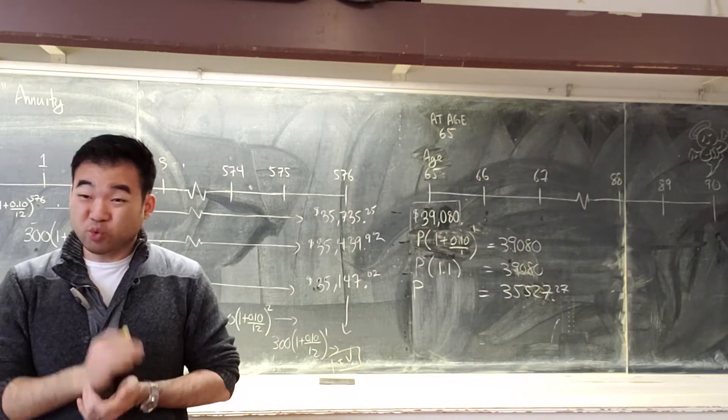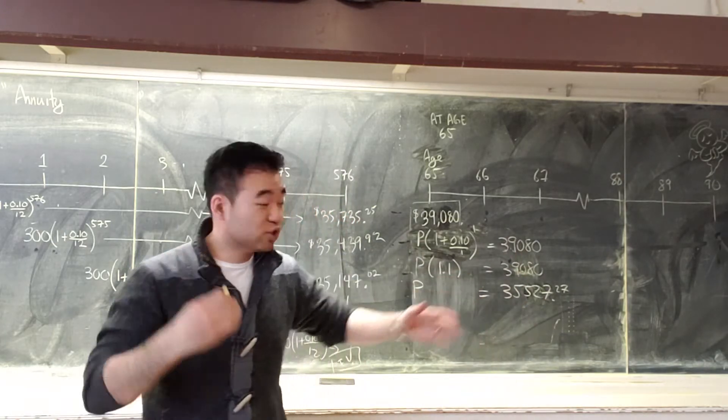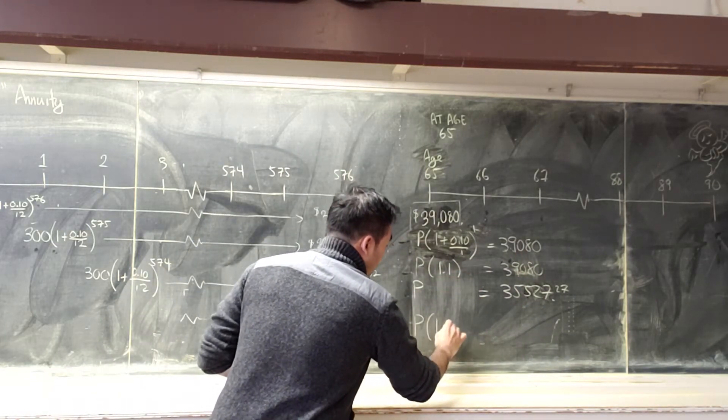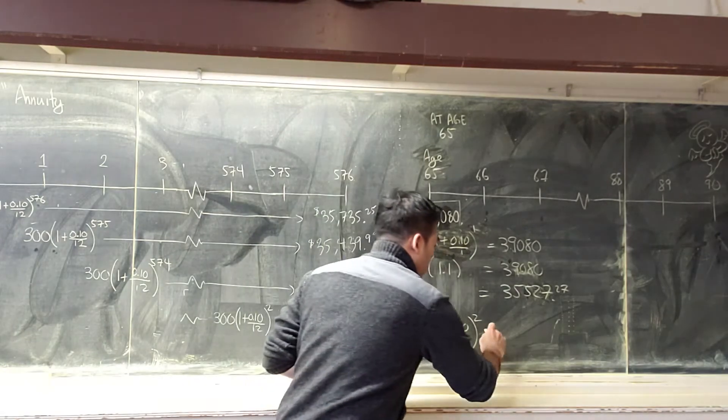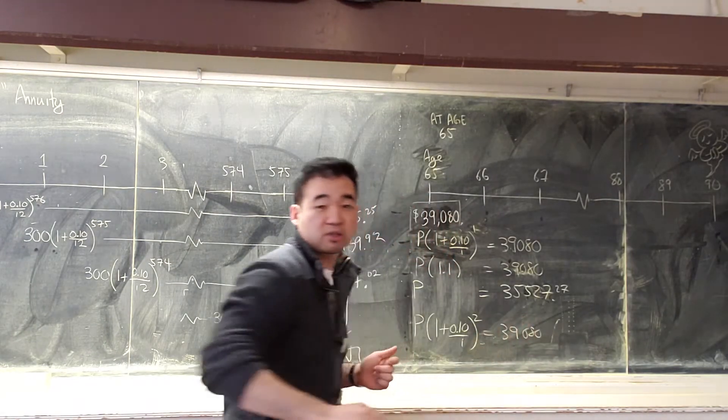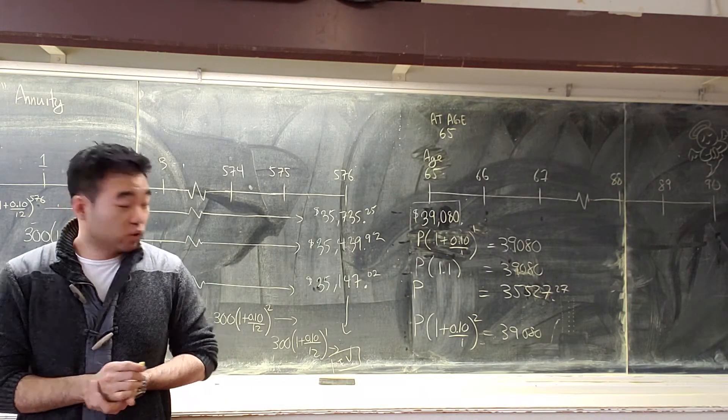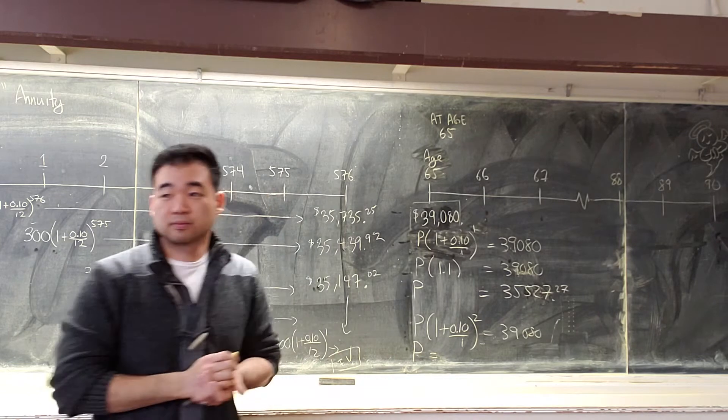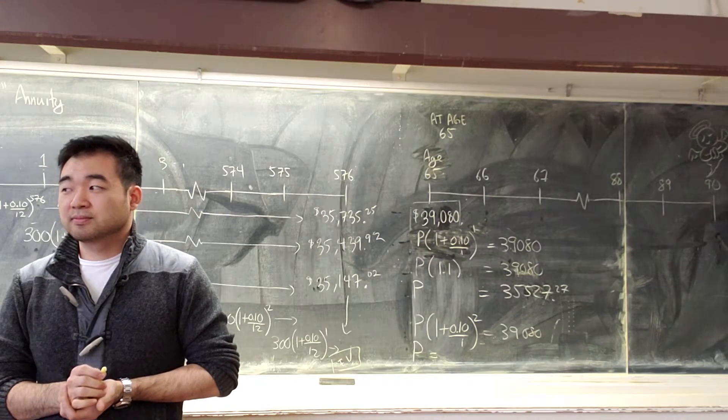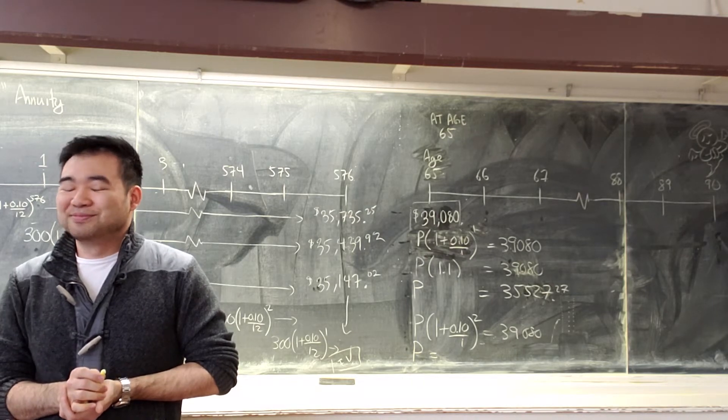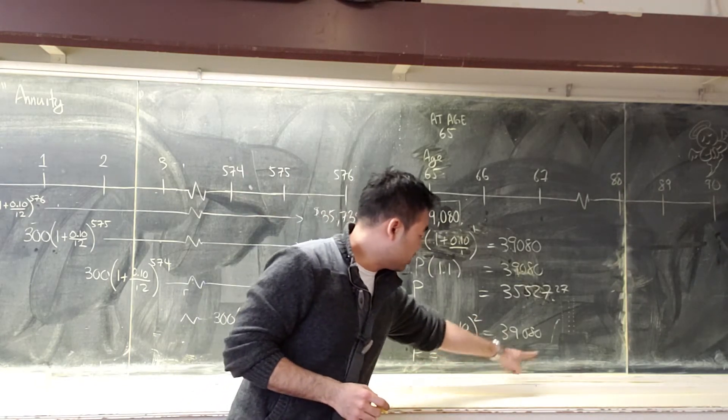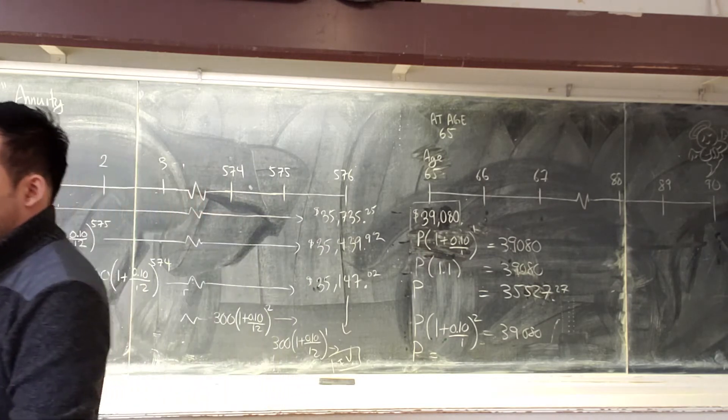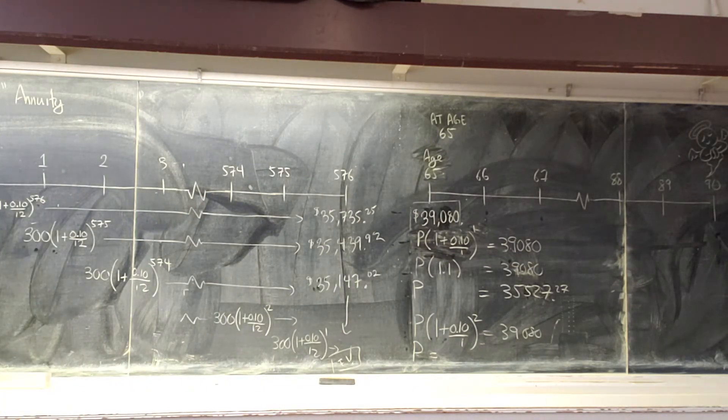So, do I need all $39,000 right now? No. Because in one year, it's going to grow to that. Let's do it one more time. What is a principal that I would need if I'm going to get this interest for two years to turn it into $39,080? What do I need now? Use your phone if you like. So, this is 1.1 squared. So, this big number is divided by 1.1 squared.